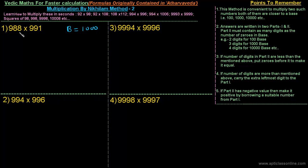The first thing we have to do is find out how much less 988 is than its base — that is, what is the difference between the base and the number. So 988 is twelve less than one thousand. Similarly, 991 is how much less than one thousand? That is nine less than one thousand.